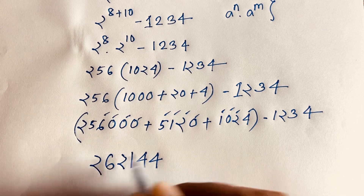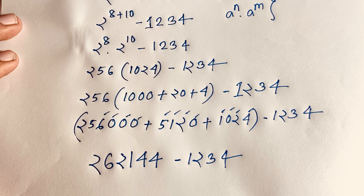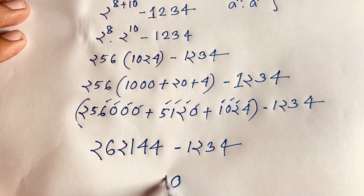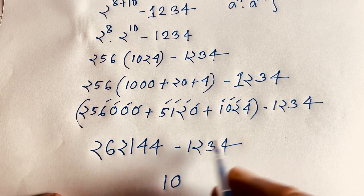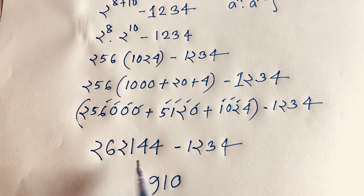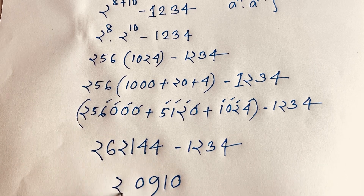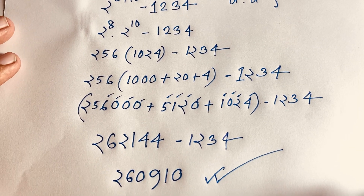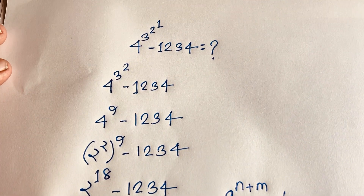Now subtracting: 4 minus 4 equals 0; 4 minus 3 equals 1; 11 minus 2 equals 9; and 1 minus 1 equals 0, leaving 26 in front. So the final answer is 260,910. Thank you all — if you enjoyed this video please subscribe to my channel for other interesting videos. Goodbye, take care!